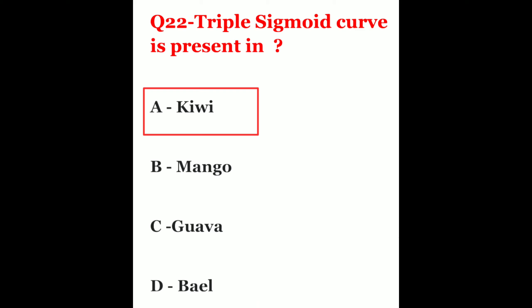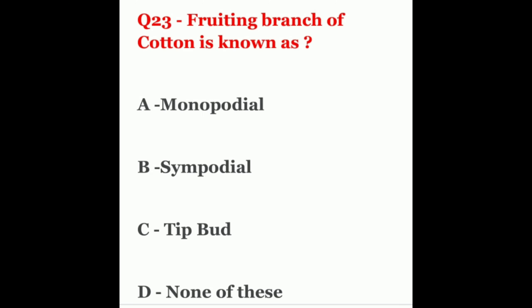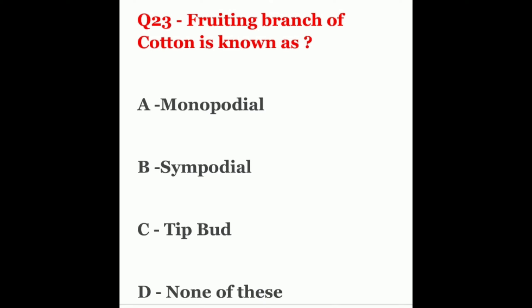Question 23. Fruiting branch of cotton is known as? The options are monopodial, sympodial, tip bud, or none of these. The correct answer is sympodial.